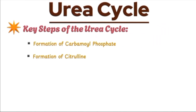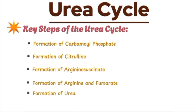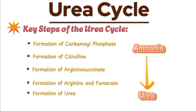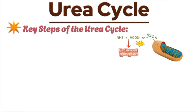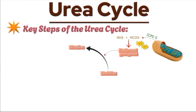The urea cycle consists of five main steps, each catalyzed by a specific enzyme, occurring sequentially to convert toxic ammonia into urea. The cycle begins in the mitochondria with the enzyme carbamoyl phosphate synthetase 1 (CPS1), which catalyzes the reaction between ammonia, bicarbonate, and ATP to form carbamoyl phosphate. This step is energy intensive, consuming two molecules of ATP, and is the rate-limiting step of the urea cycle. Next, carbamoyl phosphate combines with ornithine, an amino acid, to form citrulline. This reaction is catalyzed by ornithine transcarbamylase and occurs in the mitochondria.